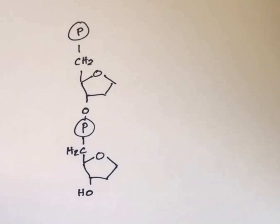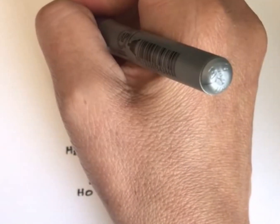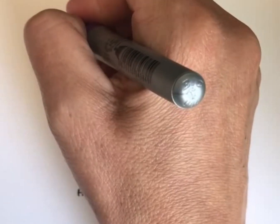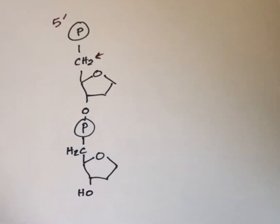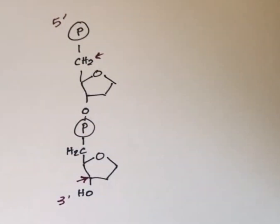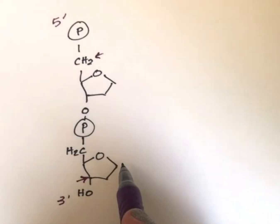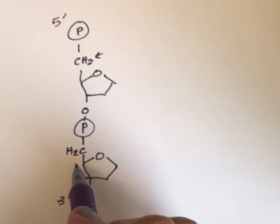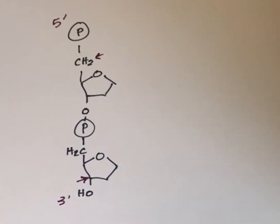So when we're labeling this, we say that this is the 5' end, because this here is the 5' carbon, and this is the 3' end, because this here is the 3' carbon. 1, 2, 3, 4, 5. So our 3' end is going to have a hydroxyl group that's not bound to another nucleotide. Our 5' end is going to have a phosphate group that's not bound to another nucleotide.